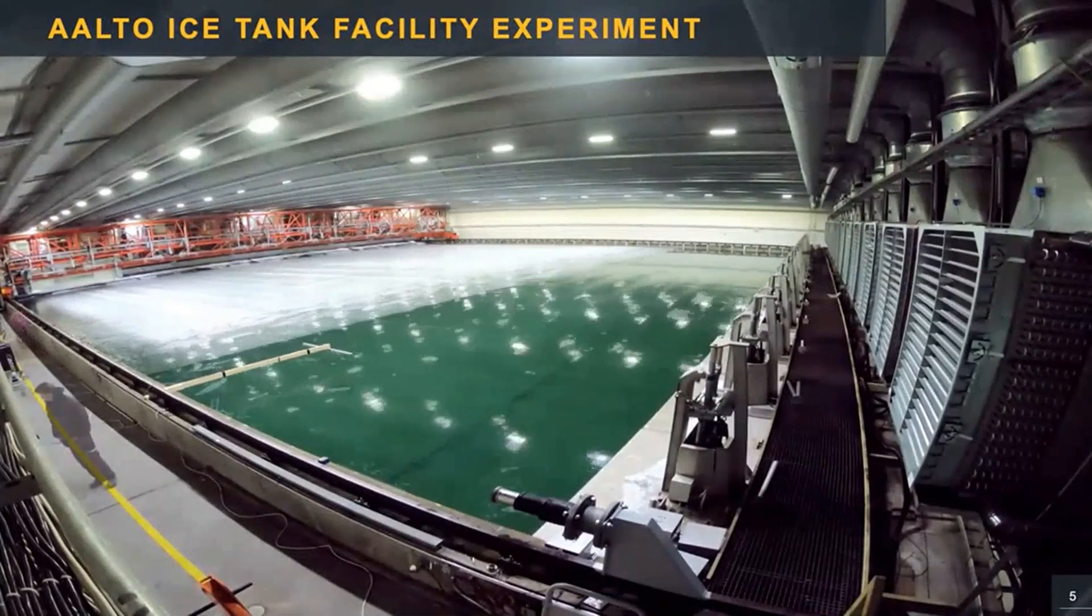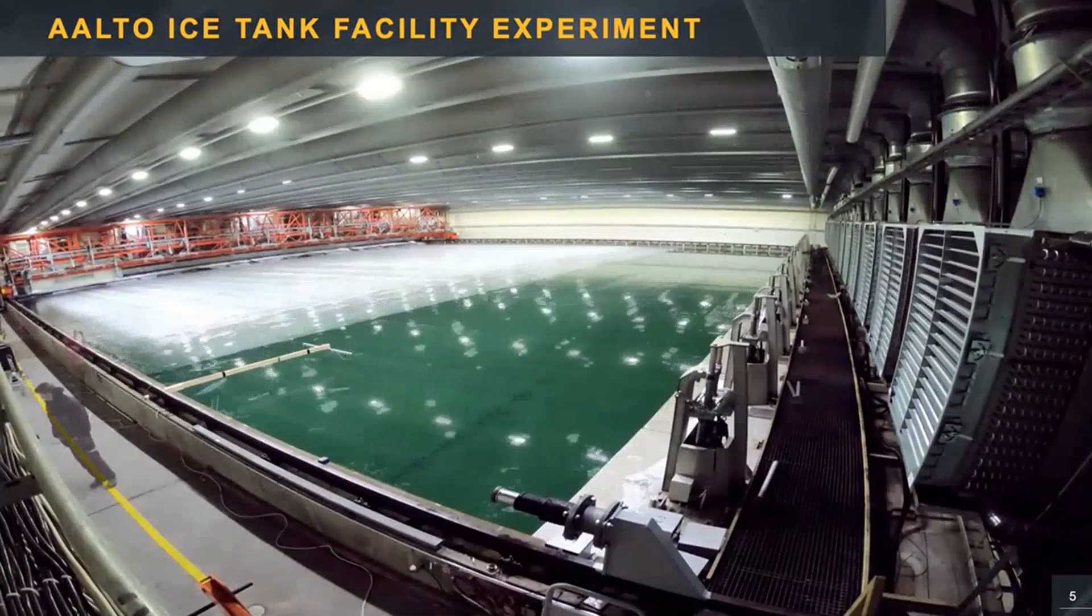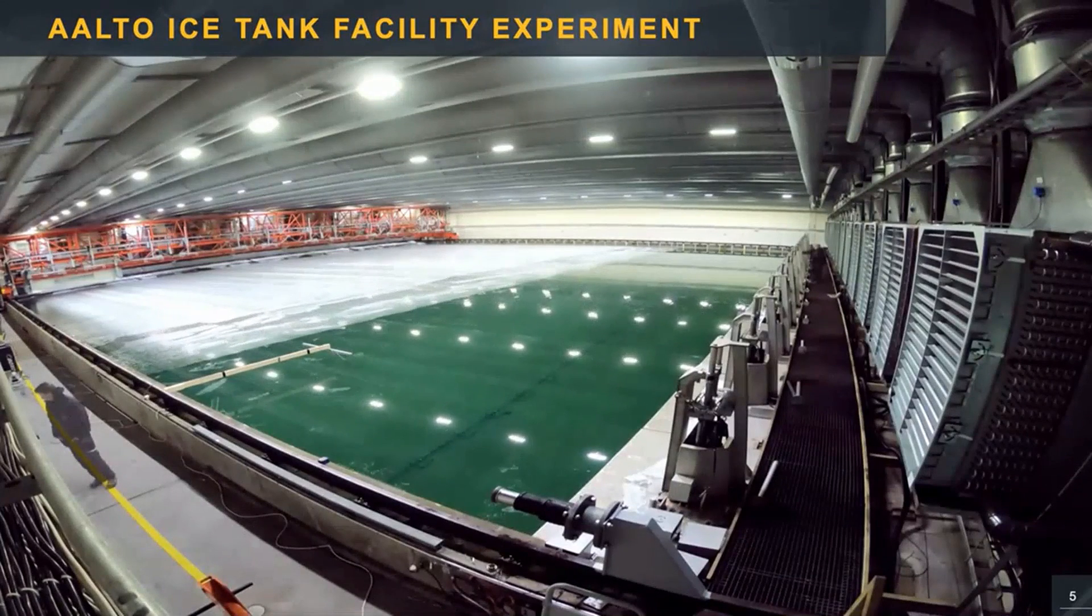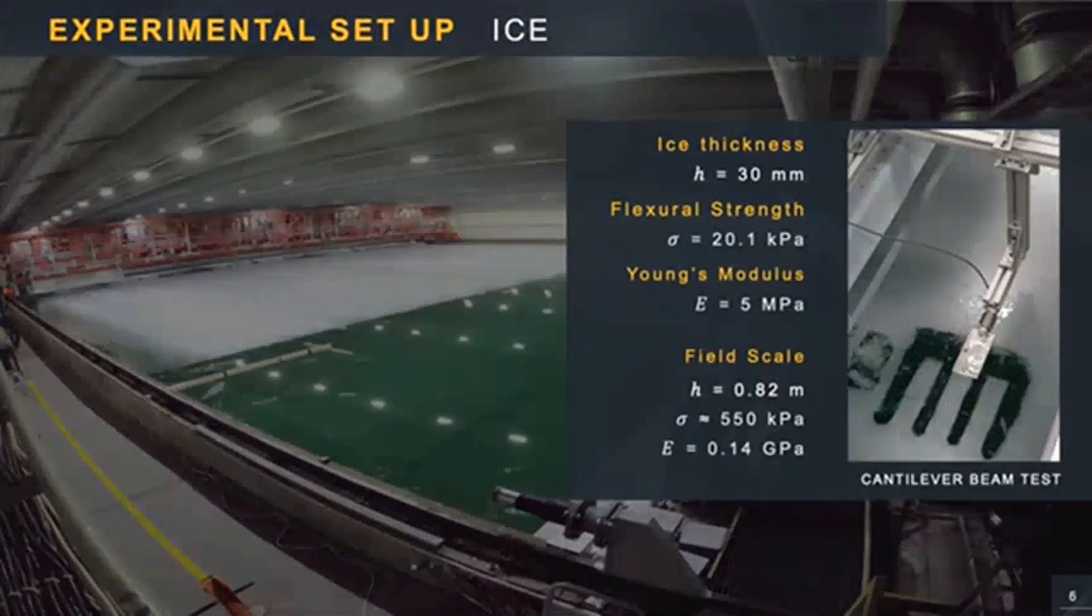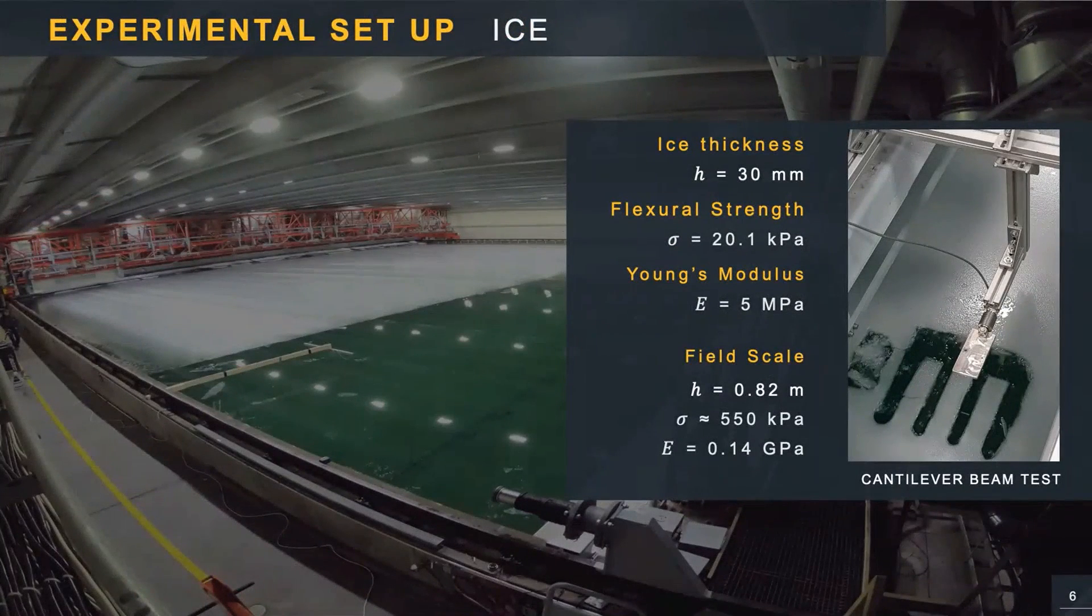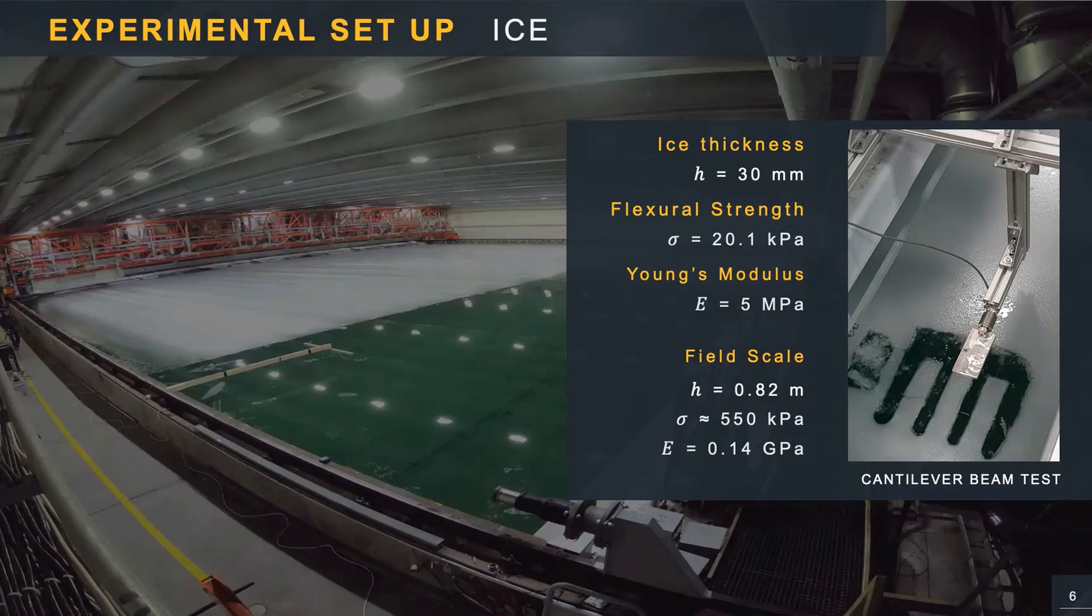The experiment consists of a series of tests with increasingly energetic incident waves, that ranges from causing no breakup to breaking up the entire ice cover. An ice cover of 3 cm was produced over the entire surface, and the ice mechanical properties were measured with destructive cantilever beam tests. Then a 10-meter strip was removed to allow the wave generation in open water. And the properties of model ice in field scale were found to be consistent with realistic sea ice, except for the Young's modulus that was about two orders of magnitude smaller.